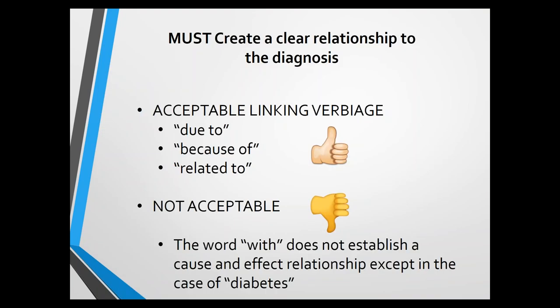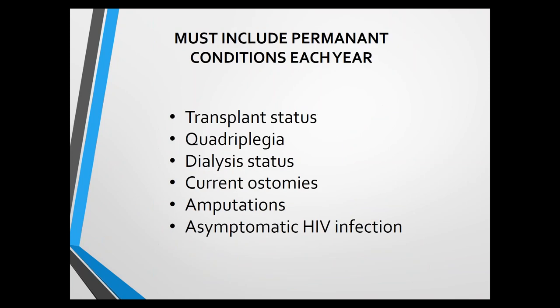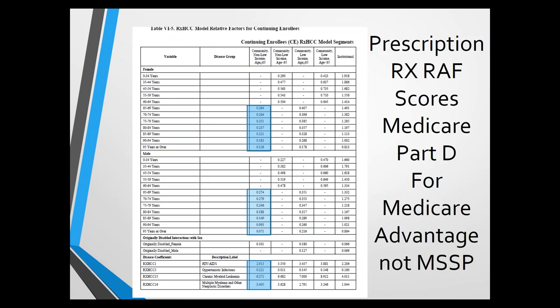CMS-acceptable linkage terminology includes 'due to,' 'because of,' and 'related to.' The word 'with' is not acceptable as a causal link — except for 'diabetes with retinopathy,' 'diabetes with renal manifestations,' or 'diabetes with neuropathy,' which are acceptable. Every year things reset, so remember to re-document ongoing conditions: transplant (qualifies for life), quadriplegia, dialysis status, ostomy, amputation, and even HIV infection — patients may be asymptomatic with negative titers but you must mention it, document it, and document a treatment plan.